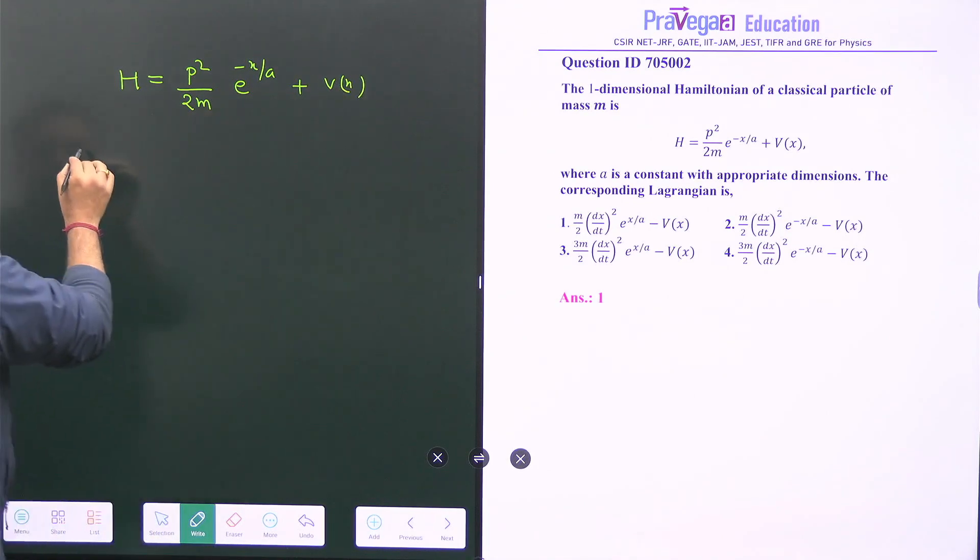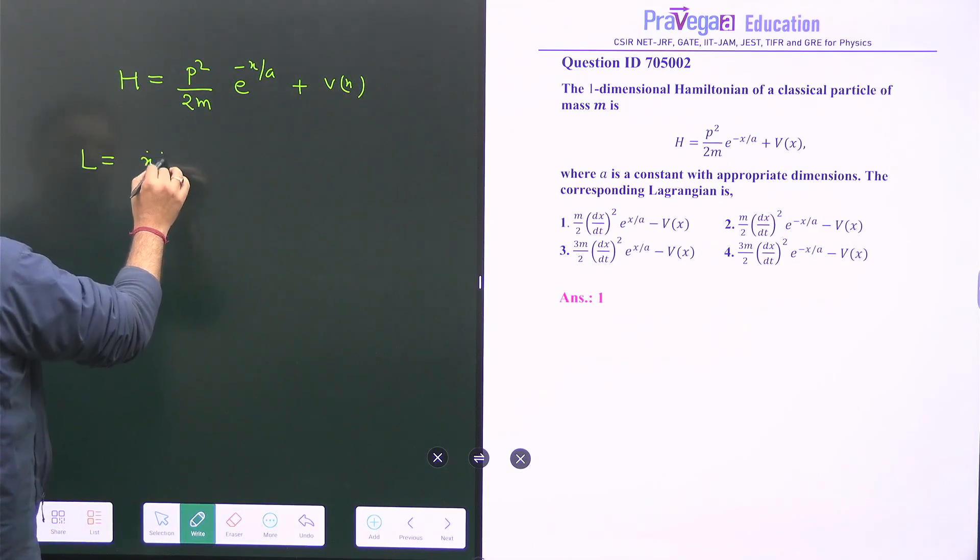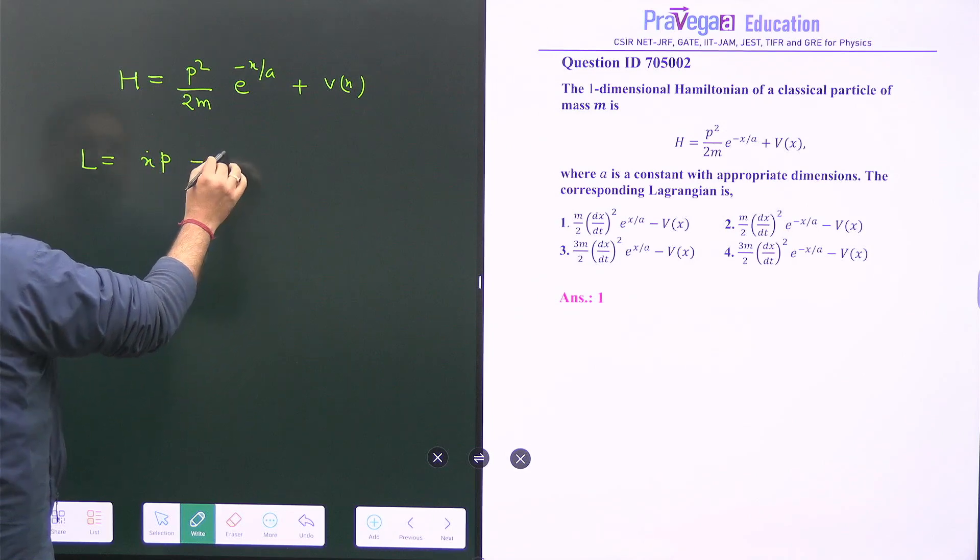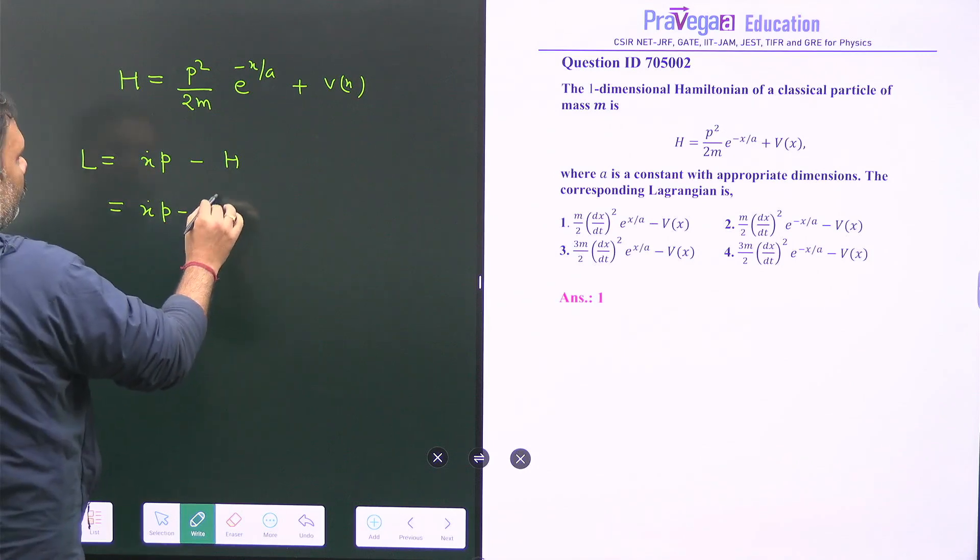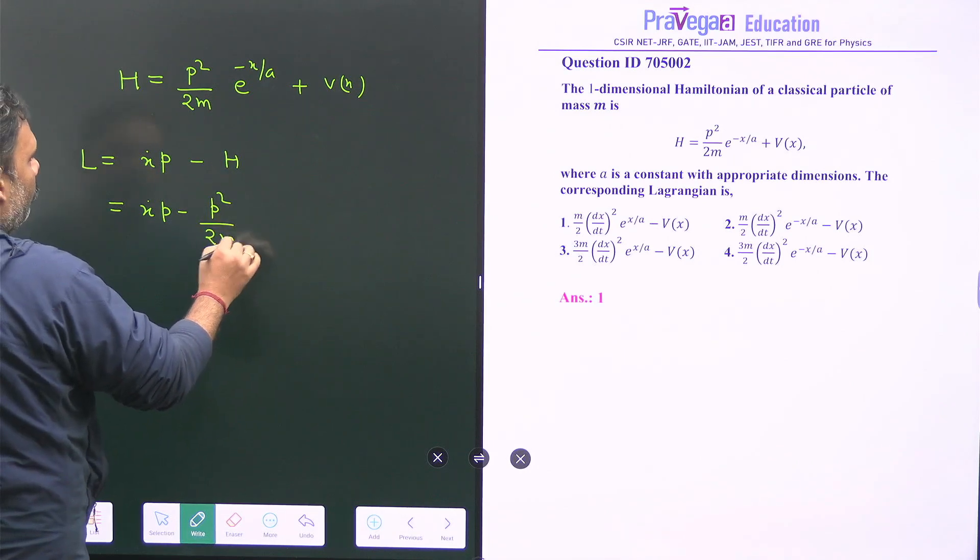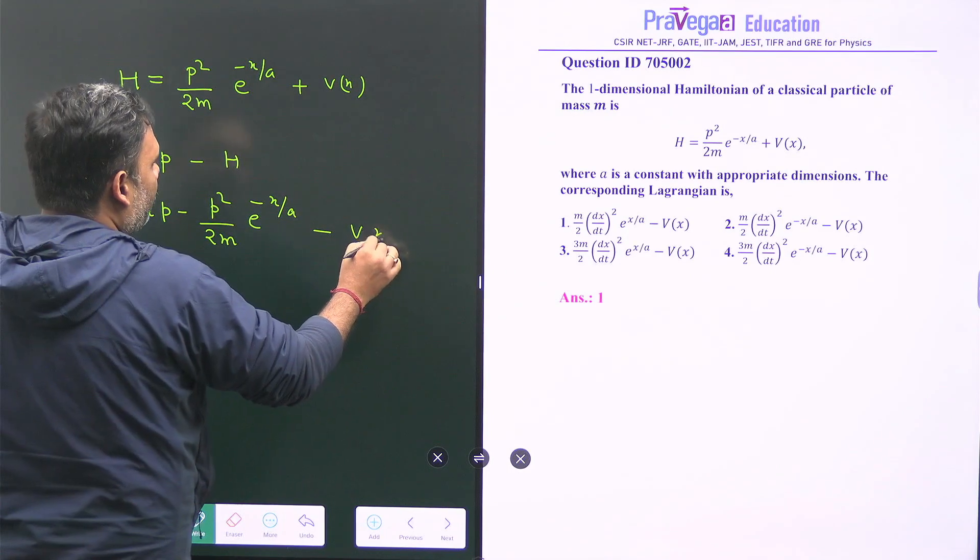So what is my Lagrangian? My Lagrangian of a system is x dot p minus Hamiltonian and that value is equal to x dot p minus p square by 2m e to the power minus x upon a minus v(x).